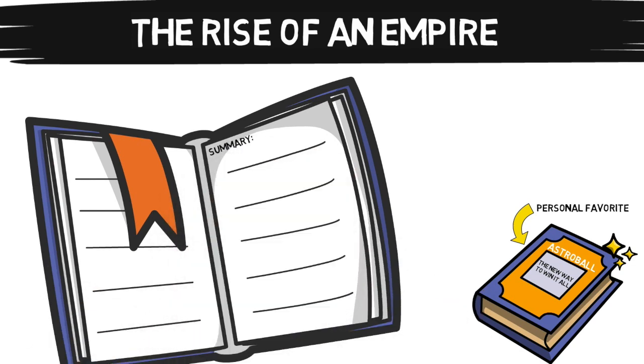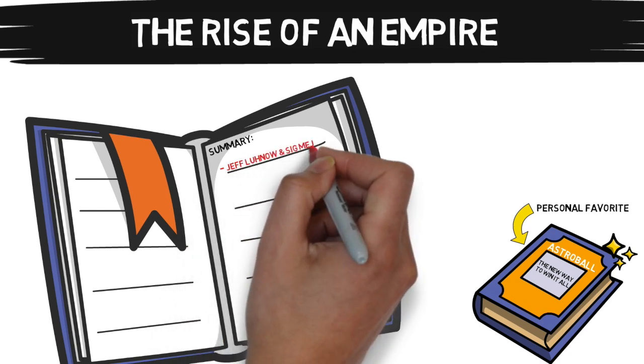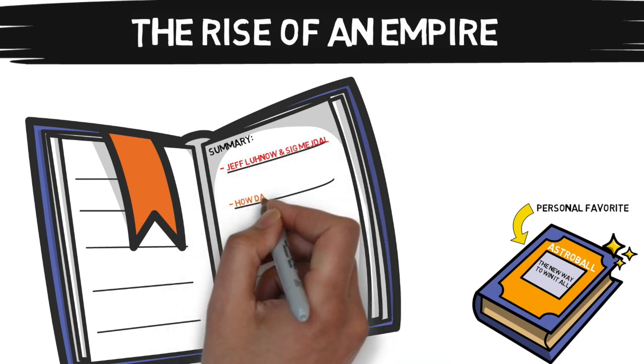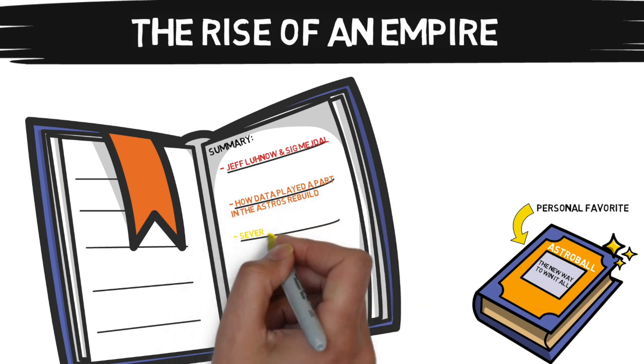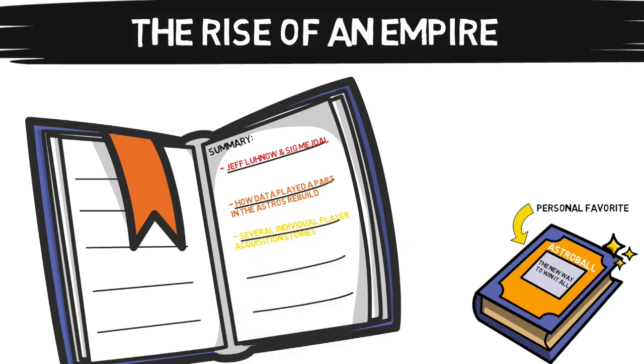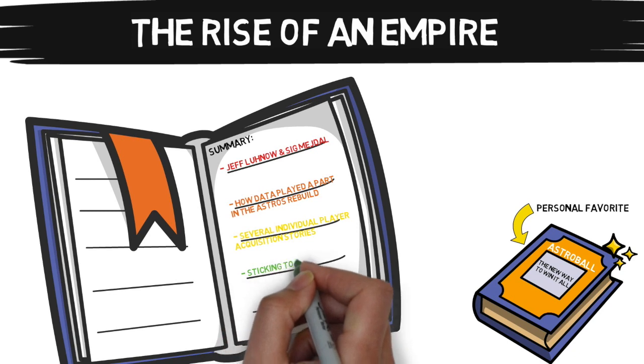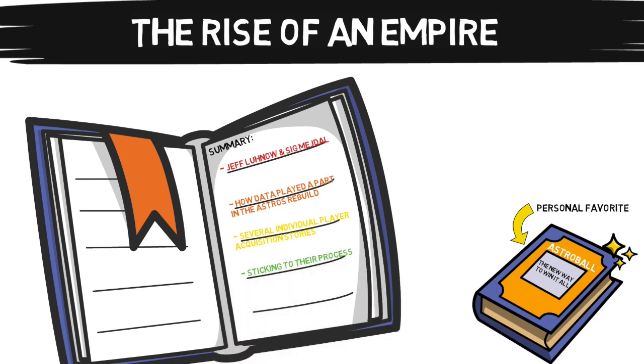It talks about the stories of the masterminds behind it all, Jeff Lunow and Sig Mejdal. It touches on how data played a part in this rebuild, several great behind the scenes looks at individual player acquisitions, Verlander's story is my personal favorite, their ability to stick to the processes that they created and the difference it made for them in their success, and then just the story of them winning it all, an inside look in the clubhouse and the upper management's role in all of this. Again, it's a phenomenal read, so go check it out.